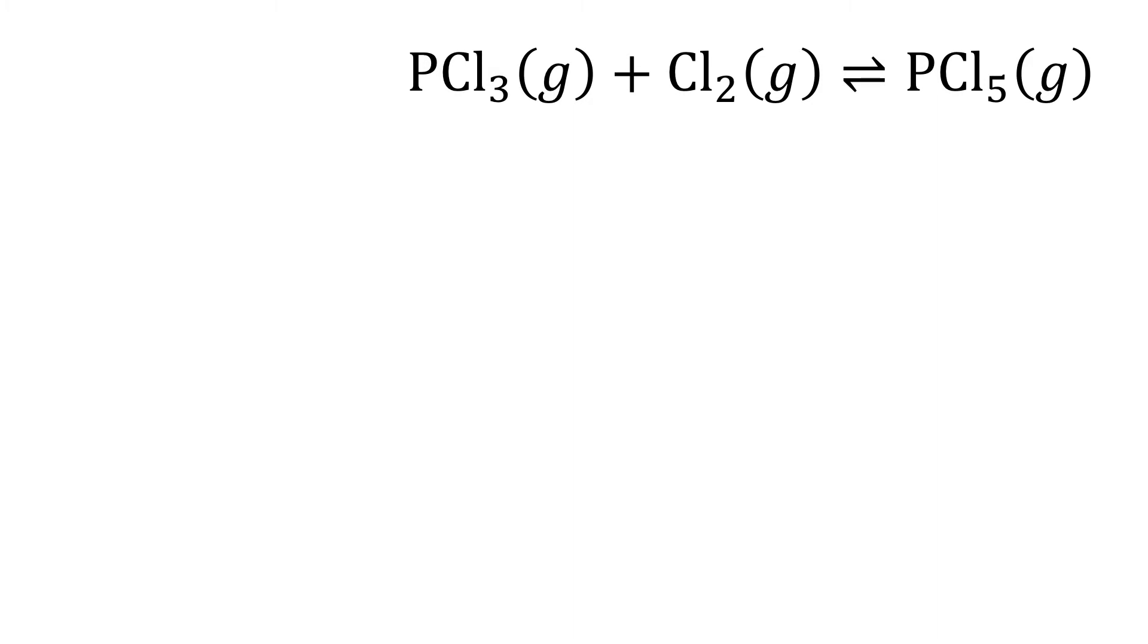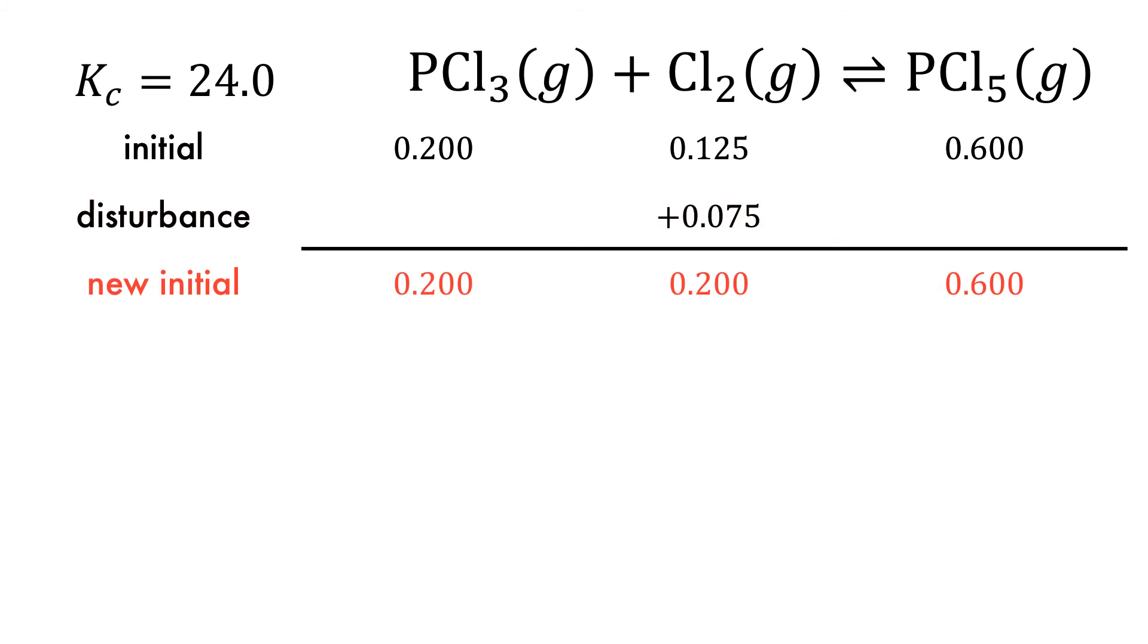For the PCl5 system, the substances are at equilibrium with an equilibrium constant of 24. After a disturbance, when more chlorine is added, the concentrations change to give a new initial value.